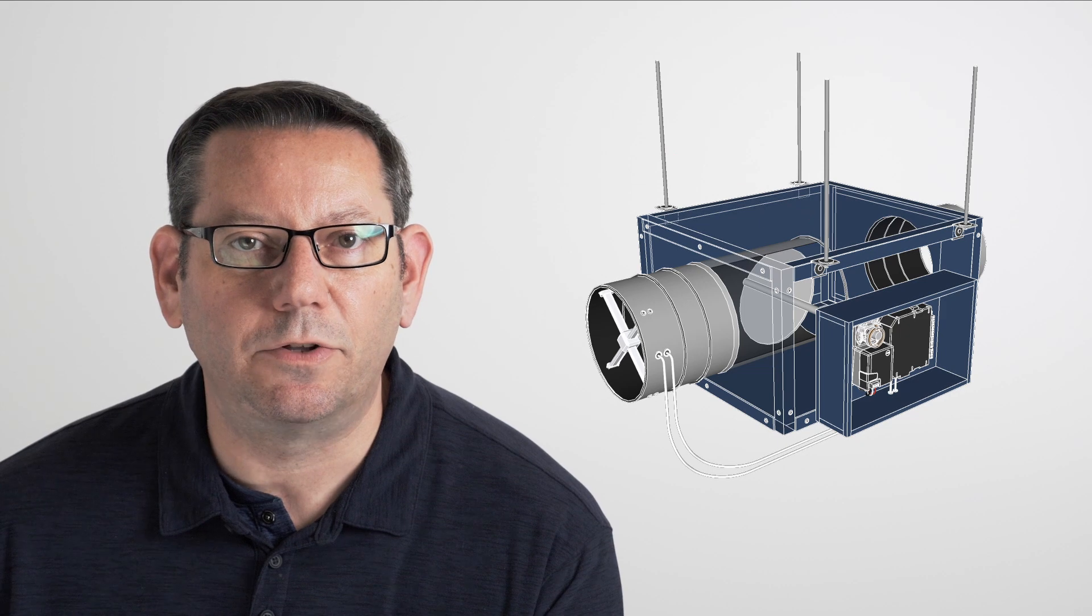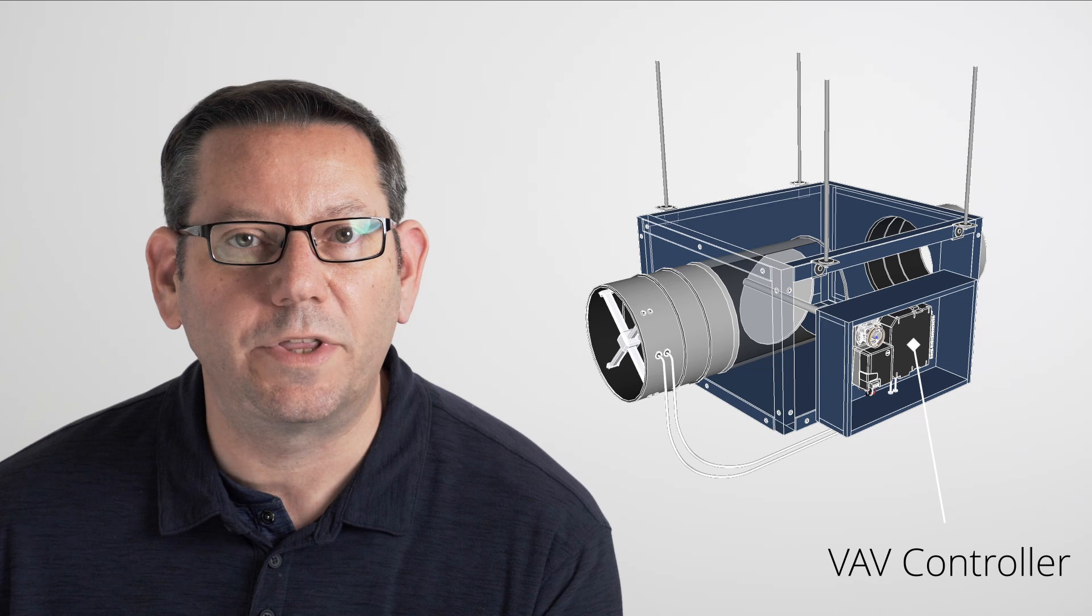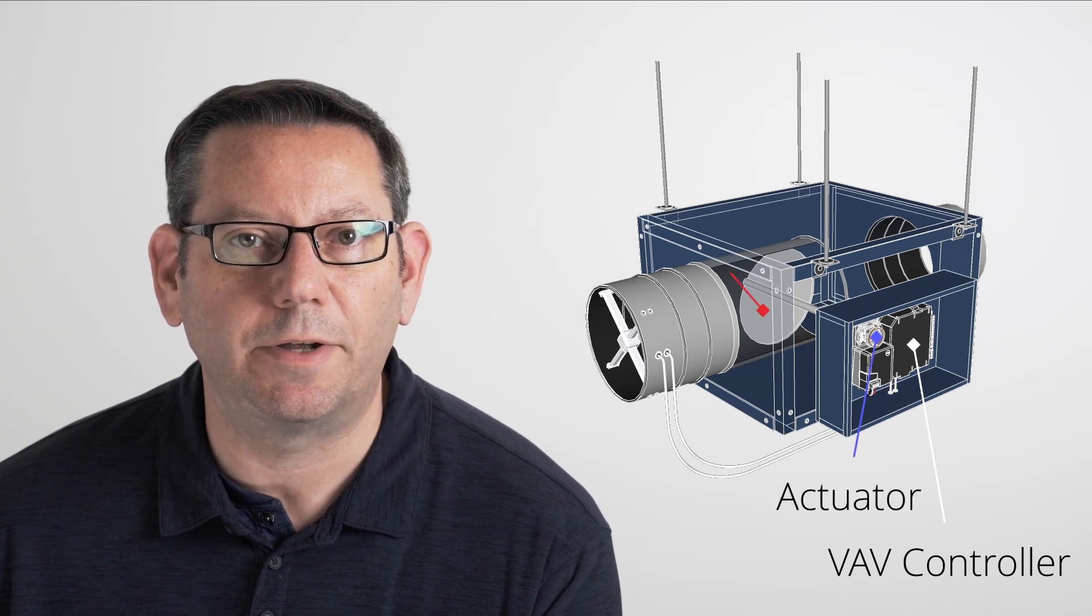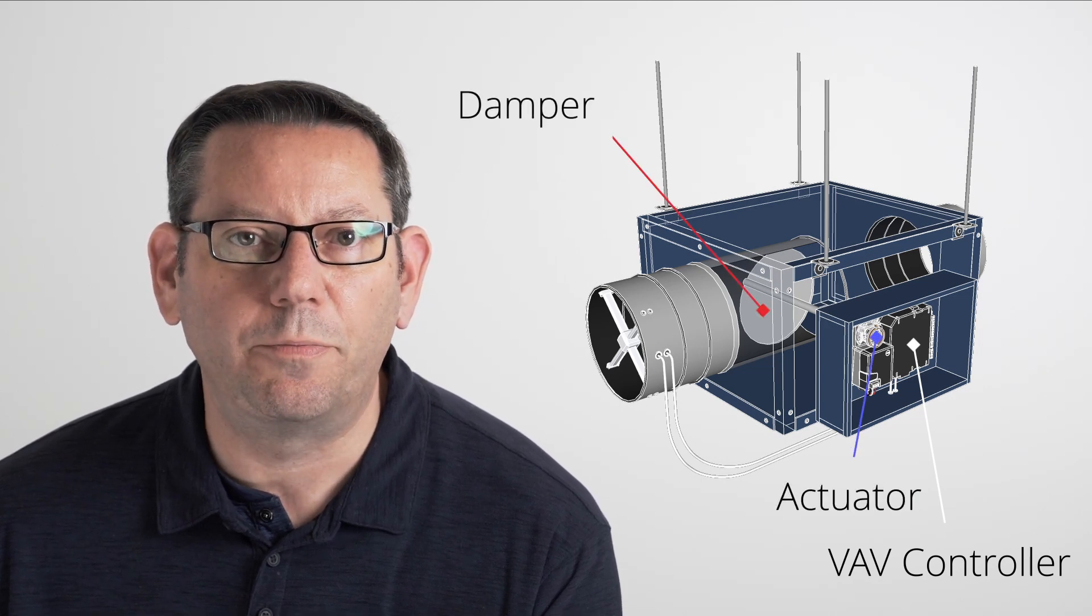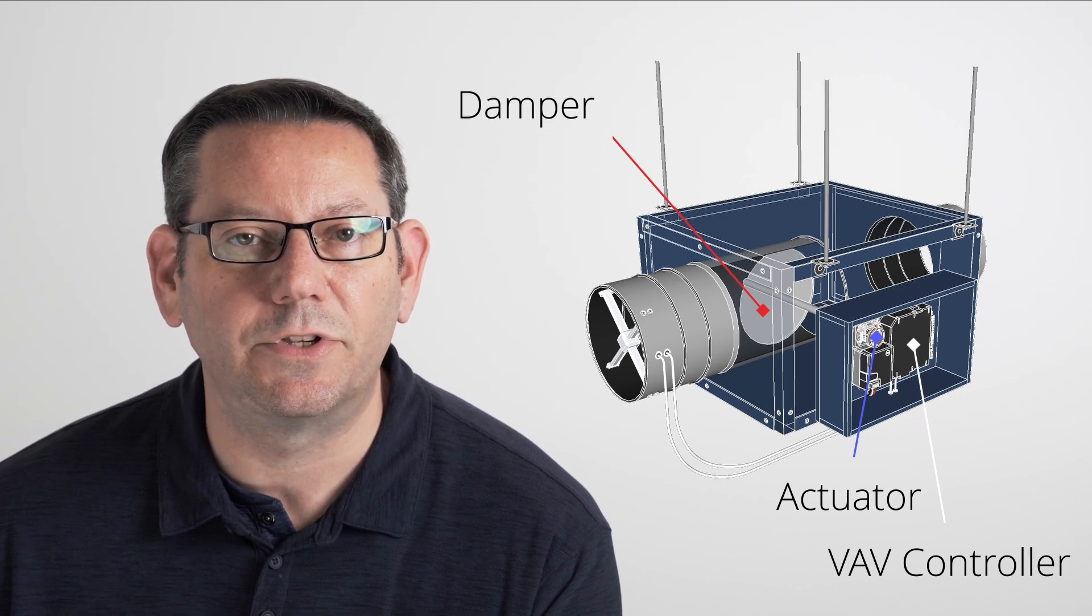A typical automated VAV box consists of the VAV controller with an actuator that controls a damper. How far open or closed this damper is will depend on the current set point and temperature of the zone.